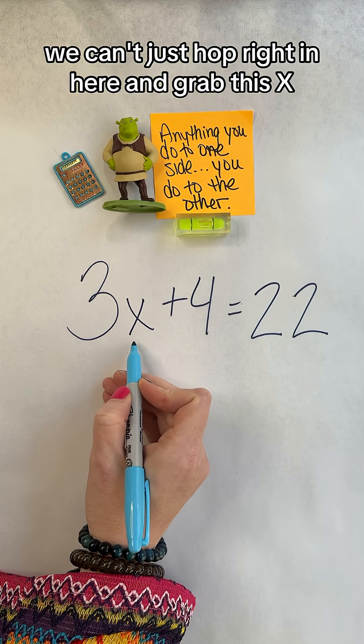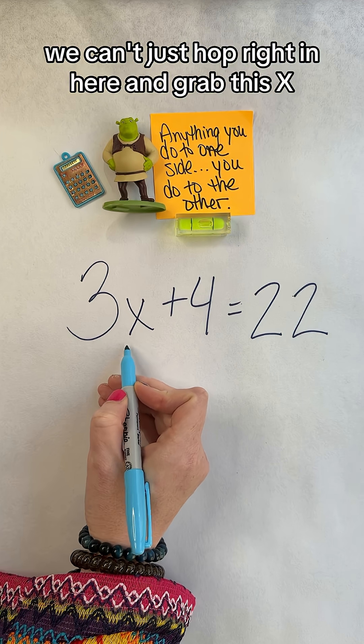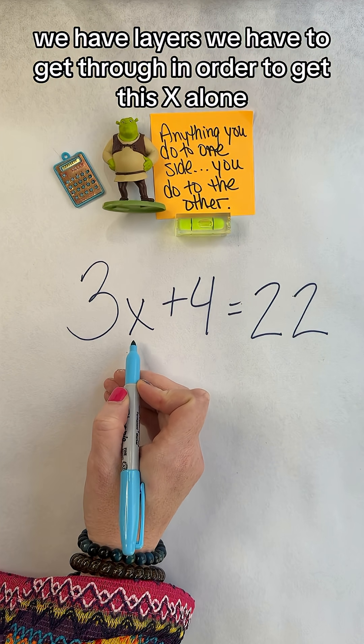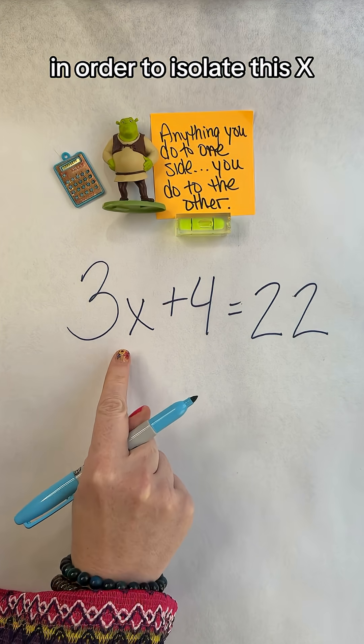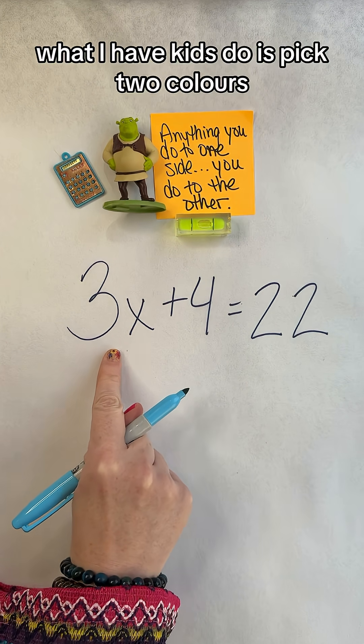When we are isolating our variable, we can't just hop right in here and grab this x. It's not going to happen. We have layers we have to get through in order to get this x alone, in order to isolate this x.